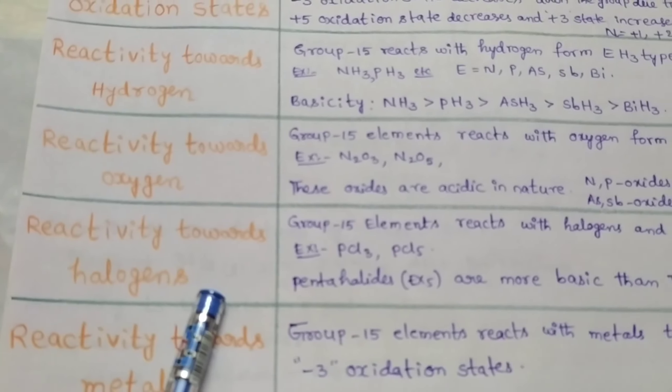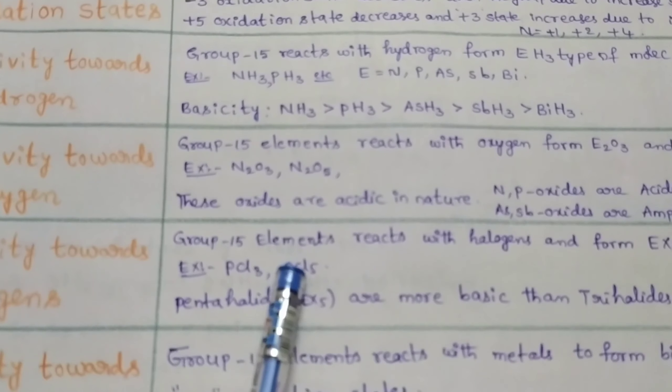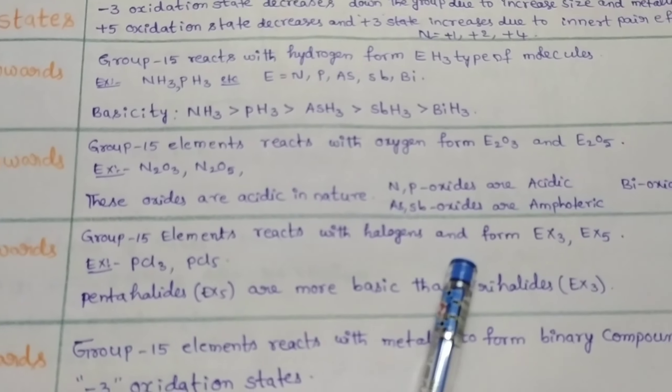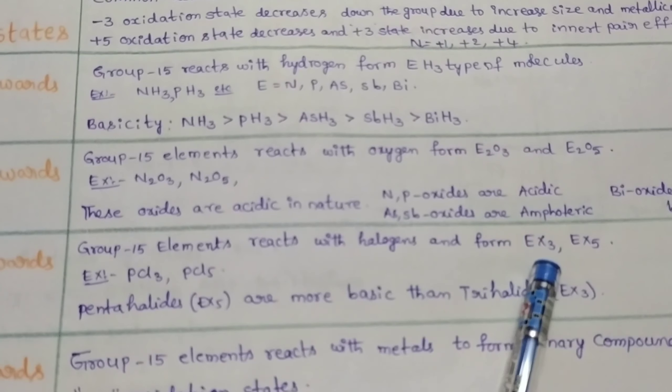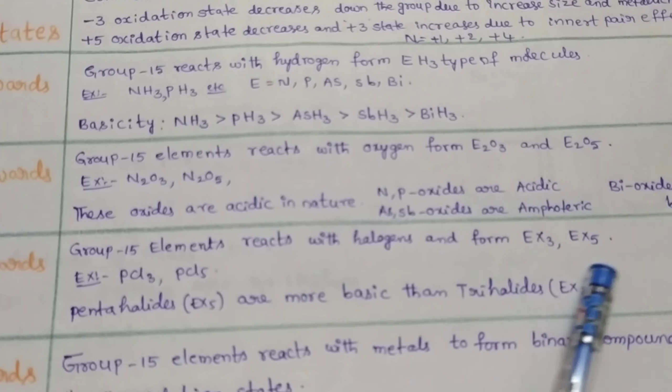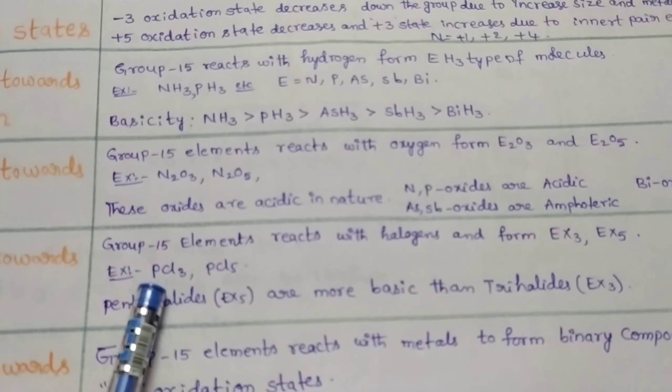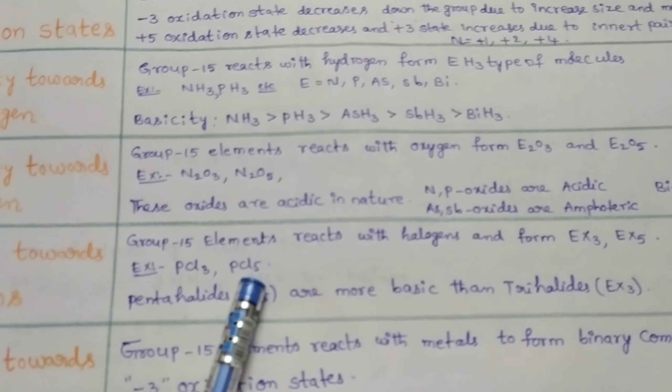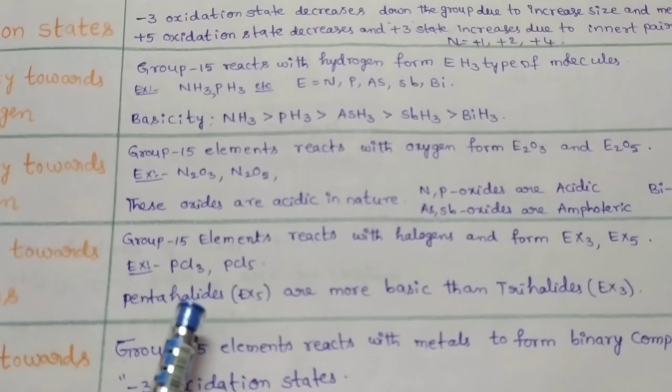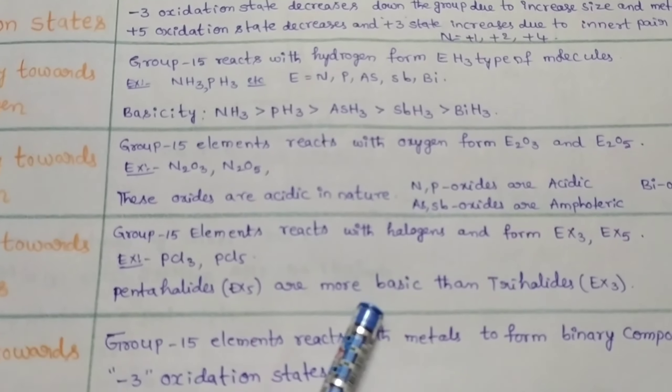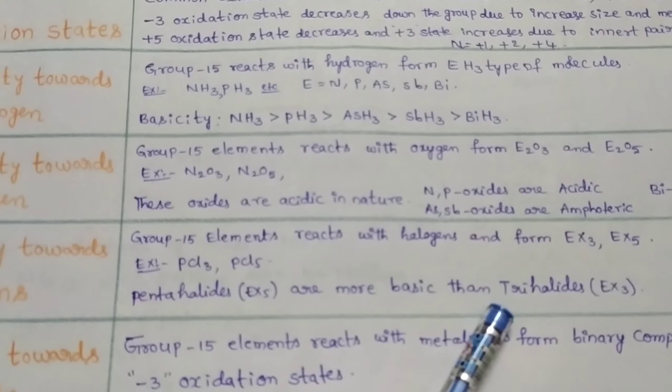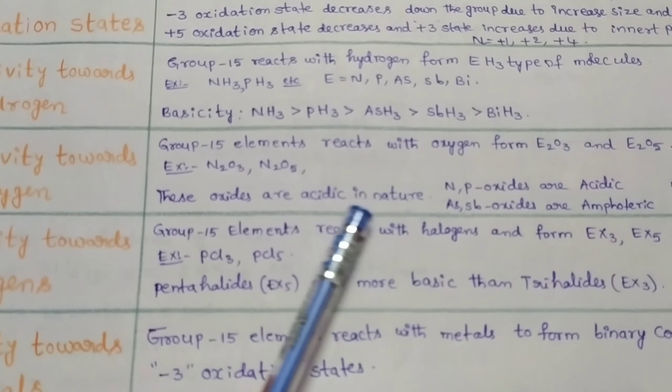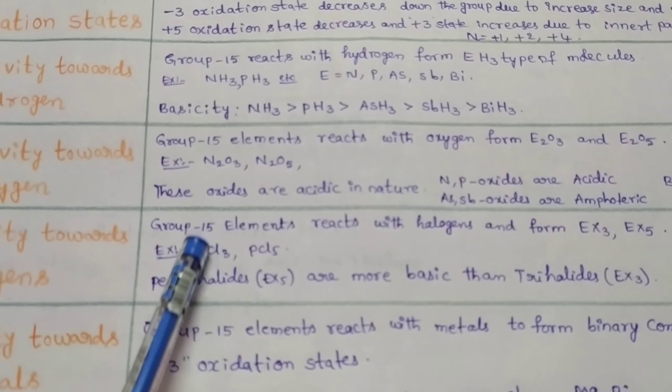Reactivity towards halogens. Group 15 elements react with halogens to form EX₃ and EX₅ molecules. For example, when phosphorus is reacted with chlorine, it forms PCl₃ and PCl₅ molecules. Pentahalides are more basic than trihalides. All these compounds are covalent in nature.